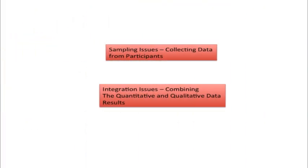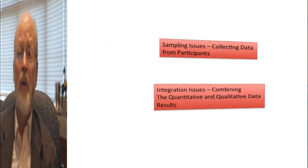So here are two issues that are very important in the mixed methods field that you need to pay attention to when designing your mixed methods projects: sampling, and how it relates to both phases in collecting data from participants; and integration, how you're actually going to combine the quantitative and qualitative results — because this is a key feature in doing good mixed methods research. Thanks for your time.